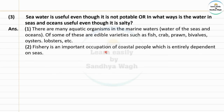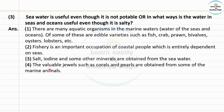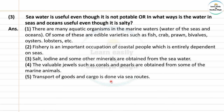Fishery is an important occupation of coastal people which is entirely dependent on seas. Fishery means fishing as an occupation. Coastal people means those living on the seashore. And pearls and corals are obtained from some of the marine animals.